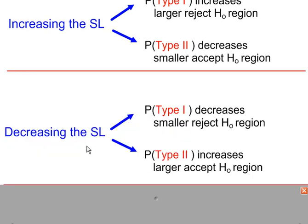If we decrease the significance level, using a smaller significance level, that means the rejection region is smaller. So the probability of a Type I error will decrease because the probability of a Type I error depends on the size of the rejection region. A smaller rejection region, a smaller probability. However, if the rejection region is smaller, then the acceptance region will be larger. This leads to an increase in the Type II error.